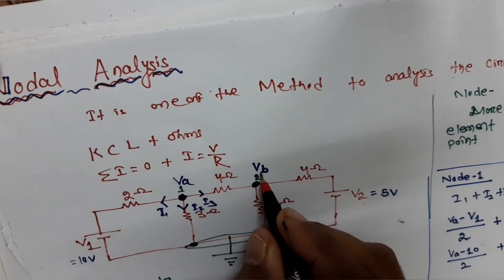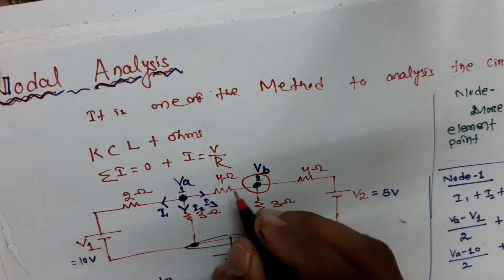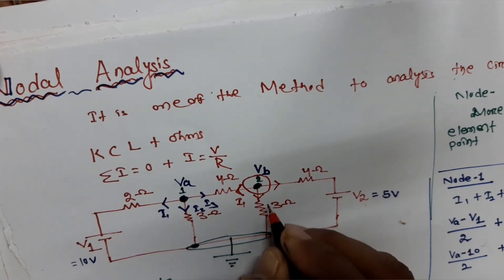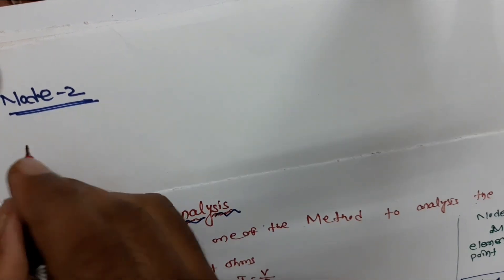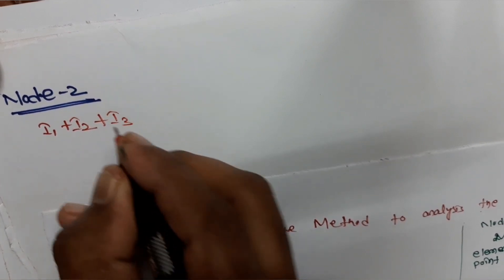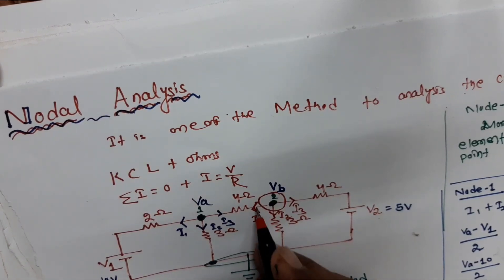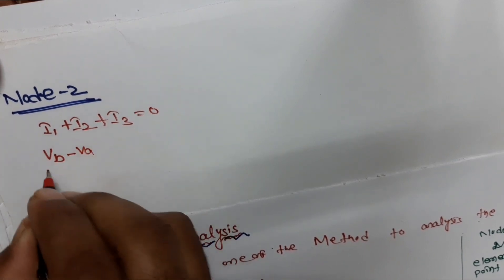Now let's write the node 2 equation. For node 2, Vb is always at higher potential, so current flows in that manner. Let this be i1, this be i2, and this be i3. Applying KCL: i1 + i2 + i3 = 0. i1 equals Vb minus Va divided by 4 ohm.